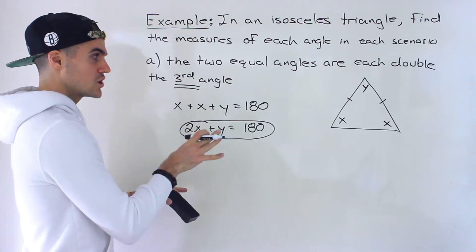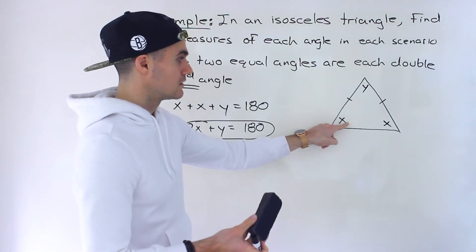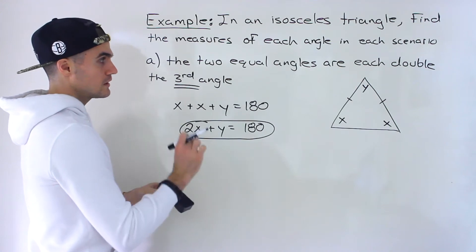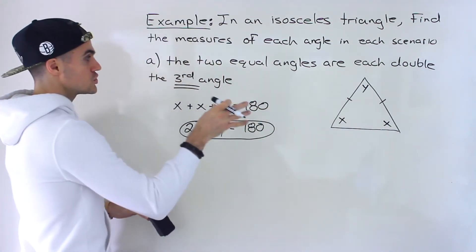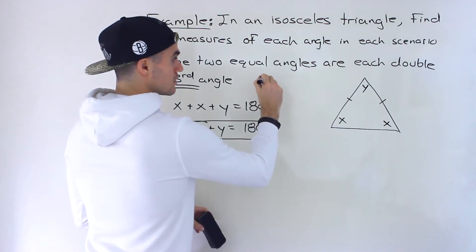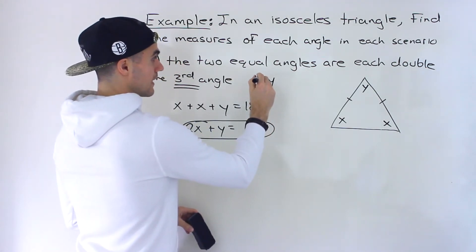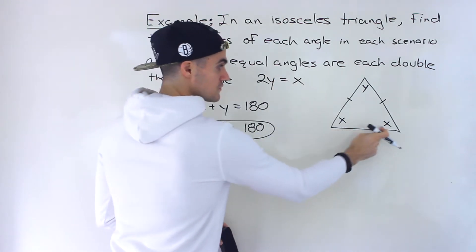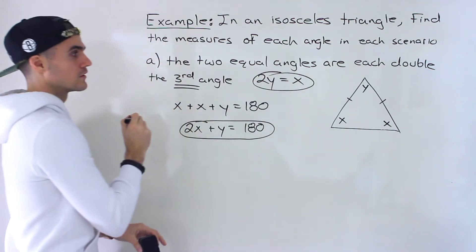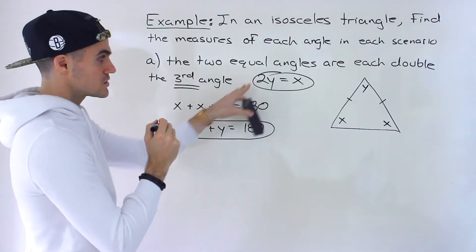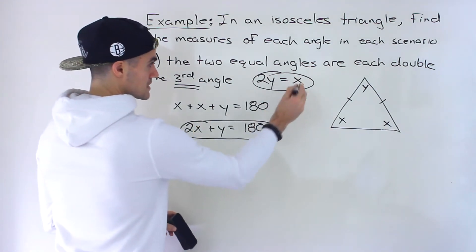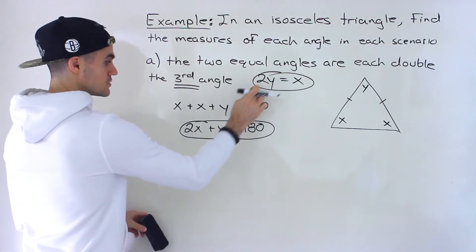What's going to change is the relationship between the equal angles and the third angle. In part A, the two equal angles are each double the third angle, meaning if we take the third angle y and multiply it by two, we get x. So we have two equations, two unknowns, and we can use substitution or elimination to solve for x and y.